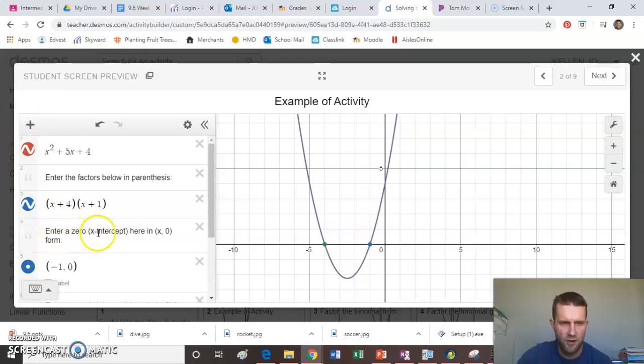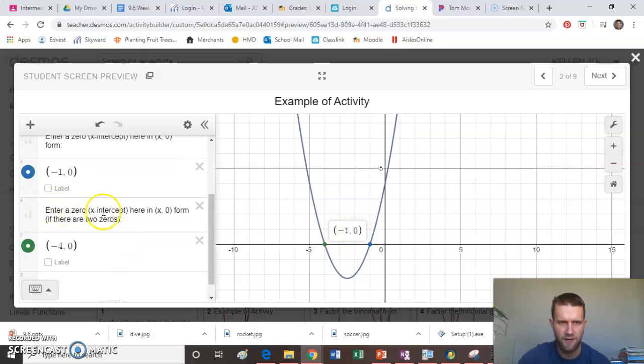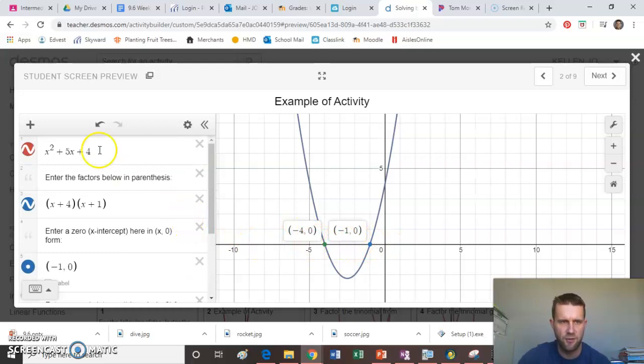It then says to enter a zero or an x-intercept here in x comma zero form. So the first zero is negative one and zero. I just copy this point right over here. And then if there's another zero to it, we enter it below this one. You can see the green dot there is negative four and zero. Those are the two solutions. If we were to solve this equation equal to zero, we would factor it as x plus four, x plus one equals zero. Then we would say x equals the opposite of four and the opposite of one, so x equals negative one or negative four.